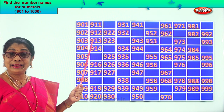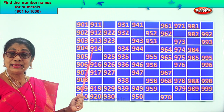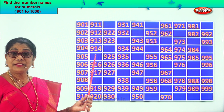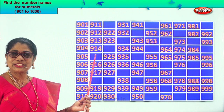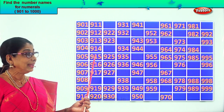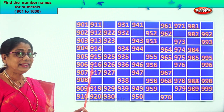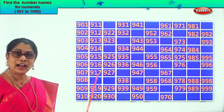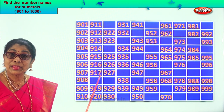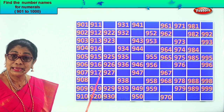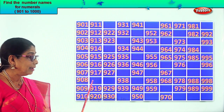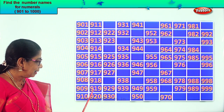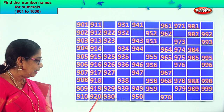Next: nine hundred thirteen, nine hundred fourteen. After fourteen comes fifteen, so we get the next missing number: 915, 916, 917. After 17, 18. So we get the next missing number, 918. 919, 920.